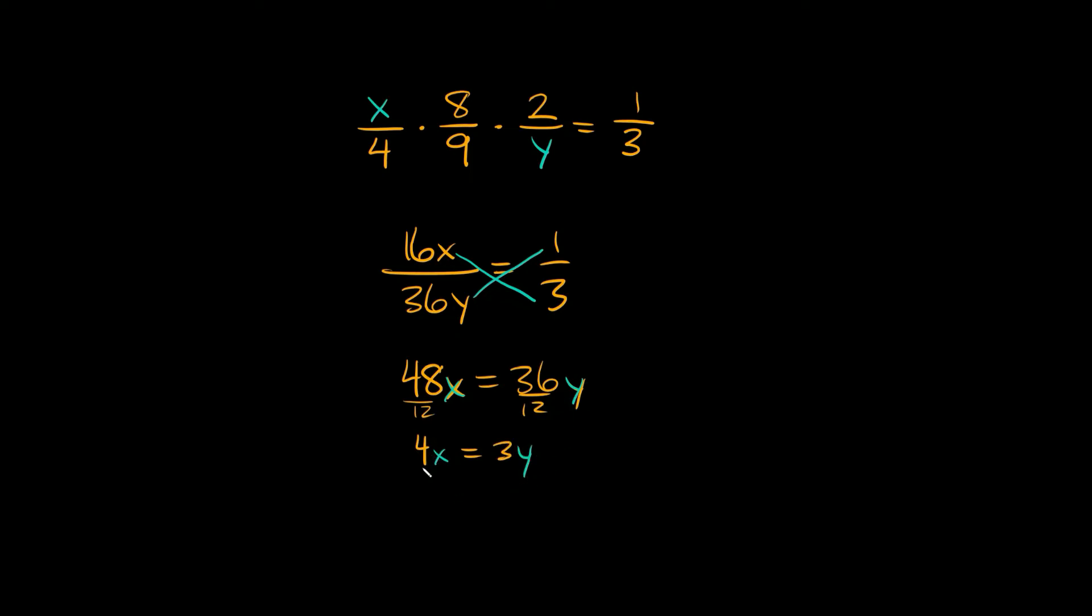So now our relationship is reduced. So we have 4x is equal to 3y. Now we just need to figure out what x and y are equal to to make this equation true or balanced.